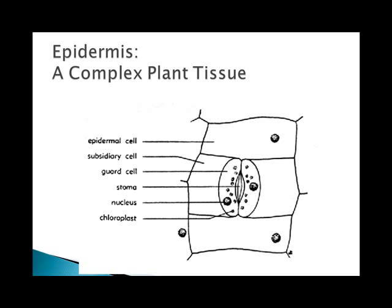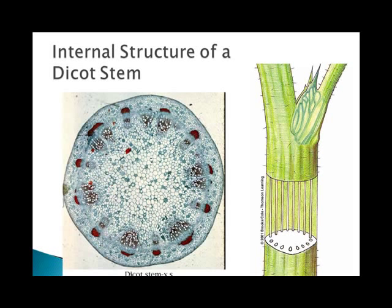The periderm replaces the epidermis when roots and stems increase in diameter and become woody. Stomata openings between pairs of guard cells permit water and gas exchange with the air. Within the shoots, it has a primary structure, and inside the stem you have a vascular bundle — a multi-stranded cord of primary xylem and phloem running lengthwise through the ground tissue. The arrangement of vascular bundles is genetically different in dicots and monocots. The stems of most dicots have vascular bundles arranged as a ring that divides the ground tissue into the outer cortex and inner pith.